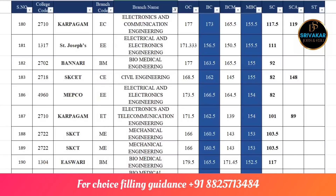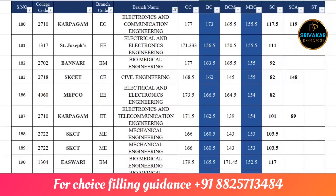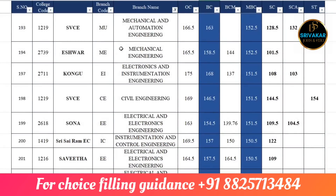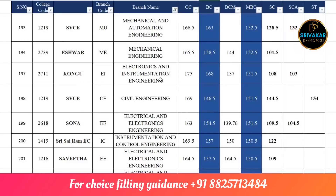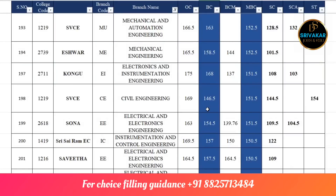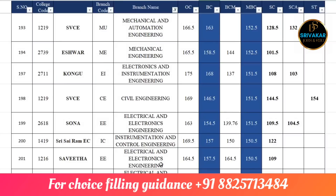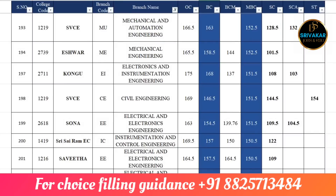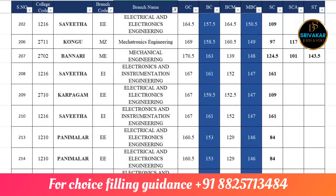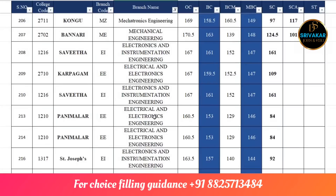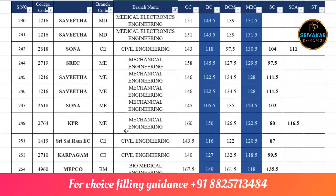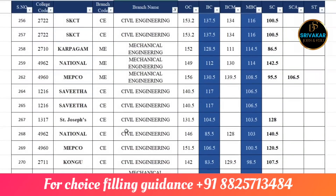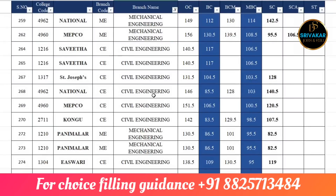Biomedical engineering 165.5, Ramakrishna Biomedical 165. Mechanical and Automation Engineering SVC is 163. E-Spur Mechanical Engineering is 158.5. Kongu E and I is 168. SVC Civil Engineering is 146.5. Sonar Triple E is 154. Sairam Instrumentation is 157. Mechanical courses and colleges are available in biomedical, medical electronics, mechanical engineering, and civil engineering.